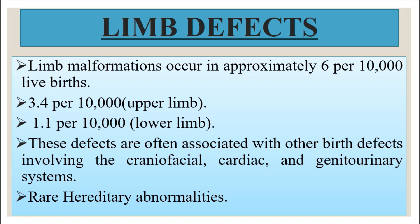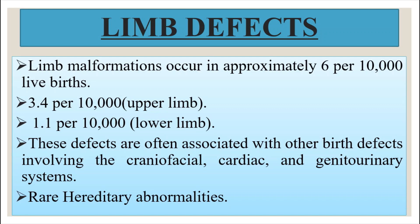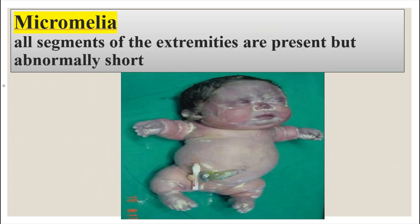Limb malformations occur in approximately 1 in 6,000 live births, with upper limb deformities more common than lower limb deformities. These defects are often associated with craniofacial, cardiac, and genitourinary birth defects. Amelia is the complete absence of one or more extremities. Meromelia is the partial absence of one or more extremities. Phocomelia is where the long bones are absent and rudimentary hands and feet are attached to the trunk by small irregularly shaped bones.